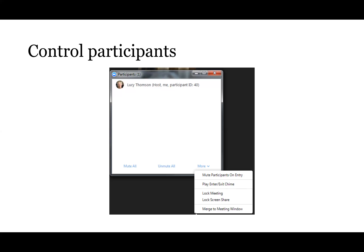You can see on my screen some of the options here — these come from the More button. We have Mute All and Unmute All. You'll see all of the participants listed. The More button allows you to do things like mute all participants on entry, which is handy because sometimes when people join an online meeting they may be typing and not have themselves muted.